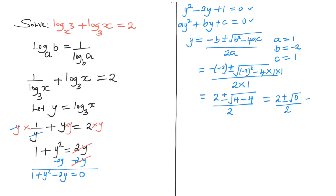We can simplify further: 2 plus or minus the square root of 0, which is 0, all over 2. We know that 2 plus 0 is 2 and 2 minus 0 is 2, so the numerator remains 2, the denominator is 2, and 2 over 2 is 1. So now we have the value of y as 1.